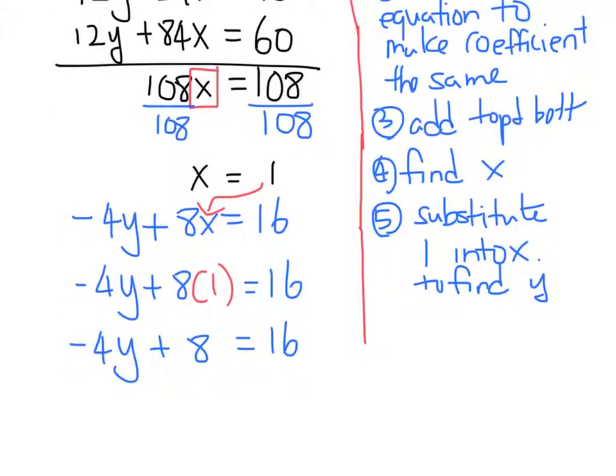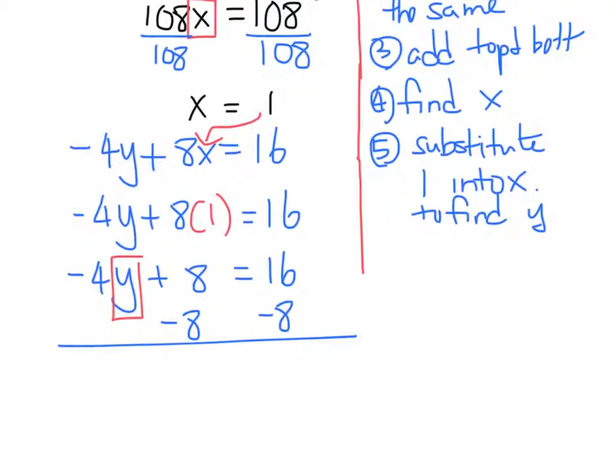Now I know that I need to find the y. So what do I have to do to both sides? Subtract 8. Yes. I have to subtract 8 from both sides. You always add or subtract, and then you divide. So then negative 4y is equal to 8. I still want to find out what y is equal to. So what do I do to both sides? Divide by negative 4. Yay. Thank you.